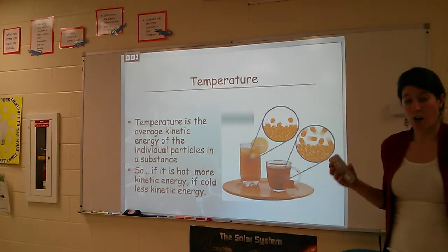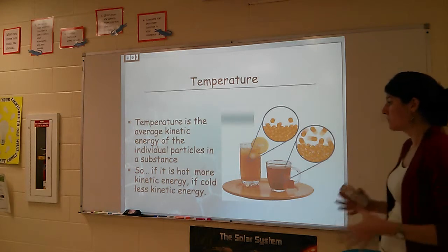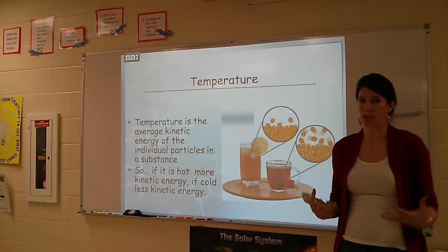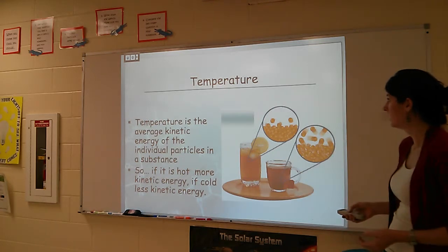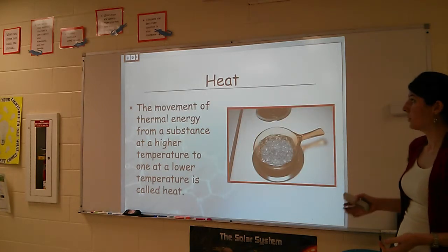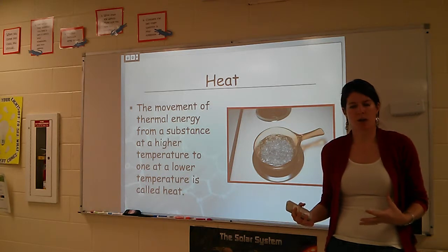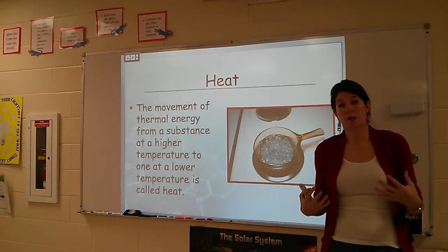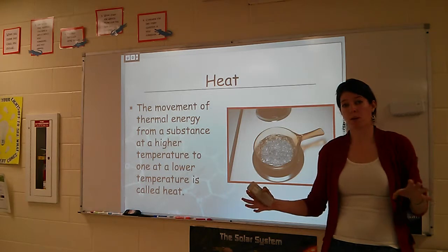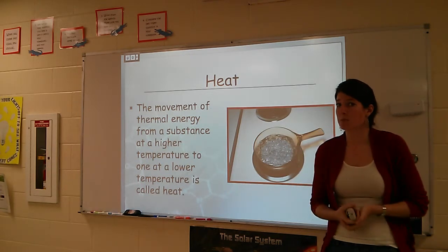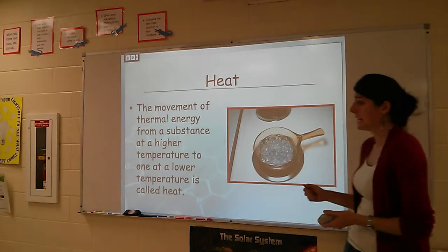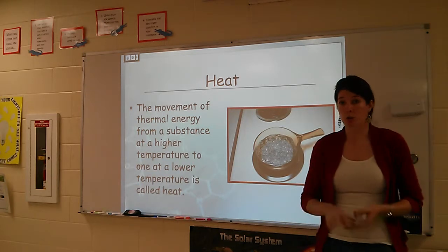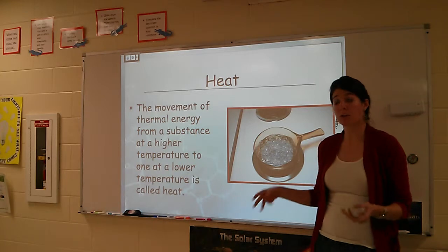Hot substances — things that we touch that are hot — have a lot more kinetic energy, versus something like ice water or snow, which has much less kinetic energy. In the world of science, heat moves from its source to somewhere where it's going to be absorbed. Cold doesn't really move anywhere. Thermal energy moves from an area of high temperature to low temperature.